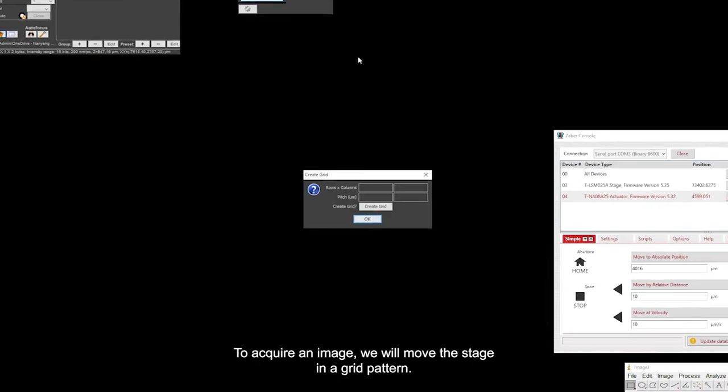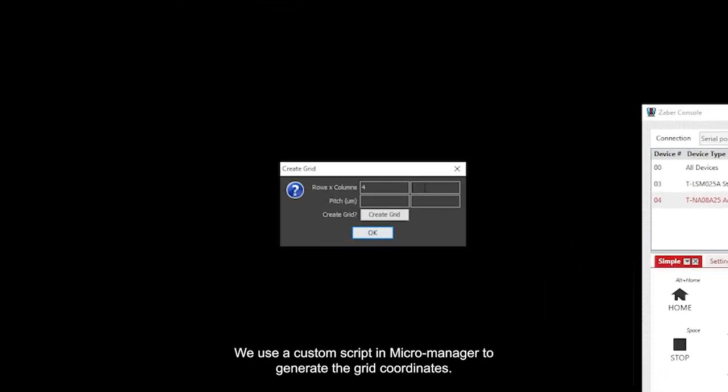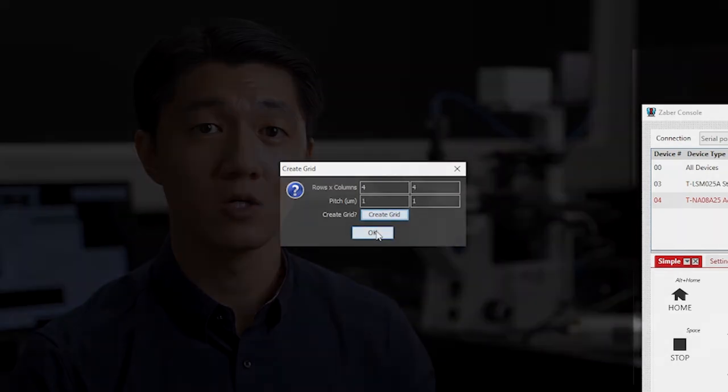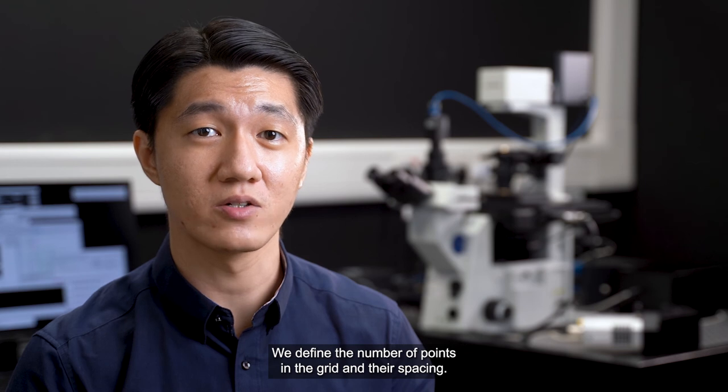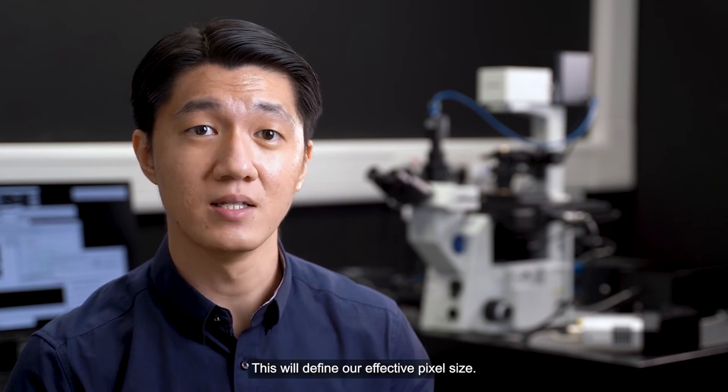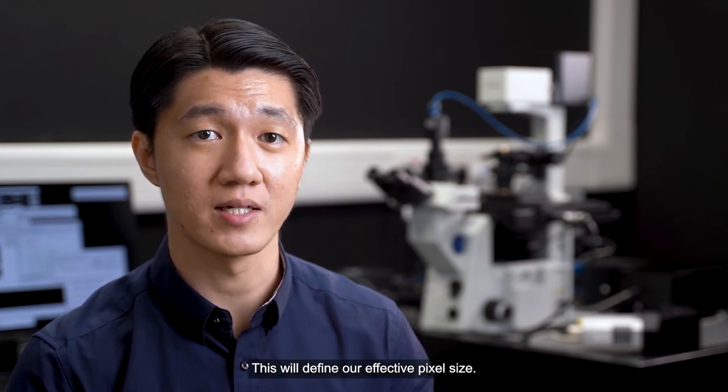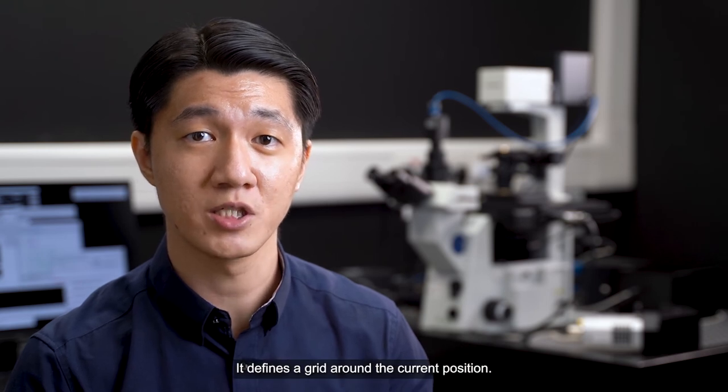To acquire an image, we will move the stage in a grid pattern. We use a custom script in MicroManager to generate the grid coordinates. We define the number of points in the grid and their spacing. This will define our effective pixel size. It defines a grid around the current position.